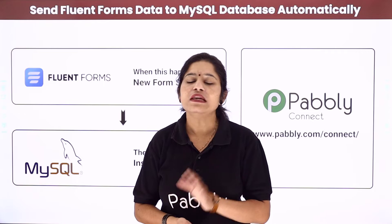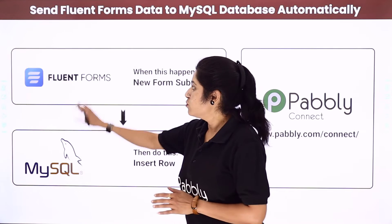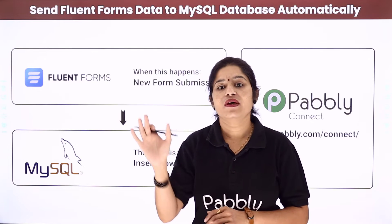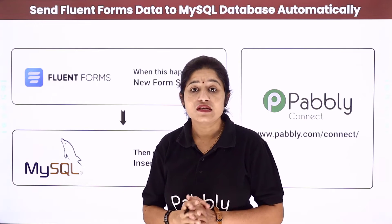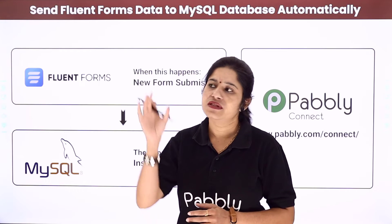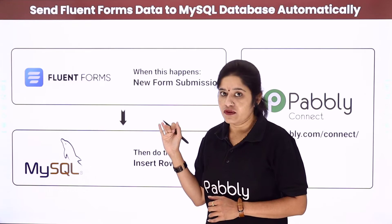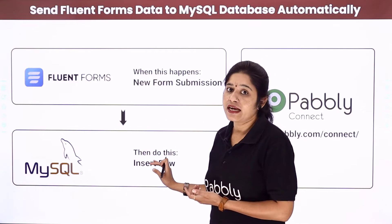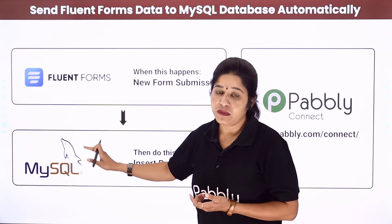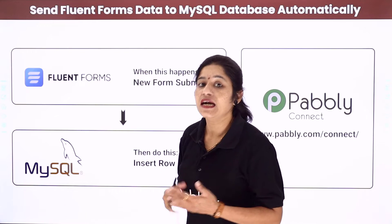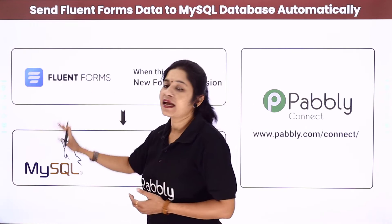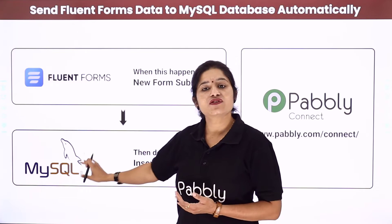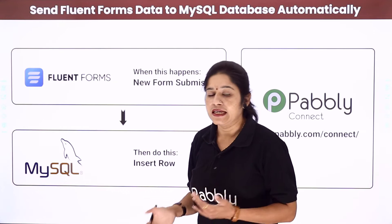So let us take an example of a lead generation form. You have created a form using your Fluent Forms account and embedded that lead generation form on a website to get the form filled. Now you want that whenever any of your customers fills that form, automatically using the details of the form submission, a new row or a new data should get created into your MySQL database table. For this we need to create a connection between Fluent Forms and MySQL, so that whenever the form is filled, automatically the details are added to your MySQL database table.